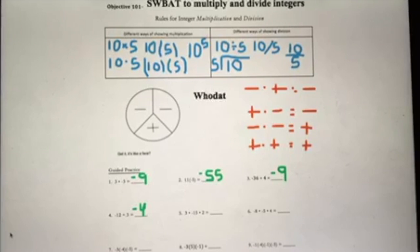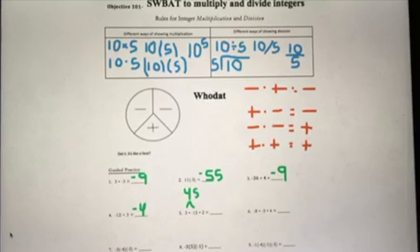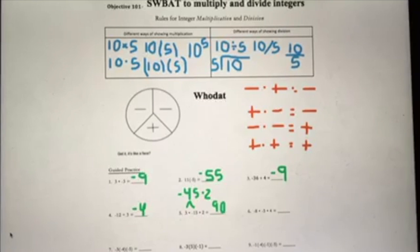At number five, we actually have multiple numbers being multiplied together. Take it step by step — start with 3 times negative 15. 3 times 15 is 45, and we had a positive 3 and a negative 15, so it's negative 45. Now do negative 45 times 2: 45 times 2 is 90, and we had a negative times a positive, so our final answer is negative 90.